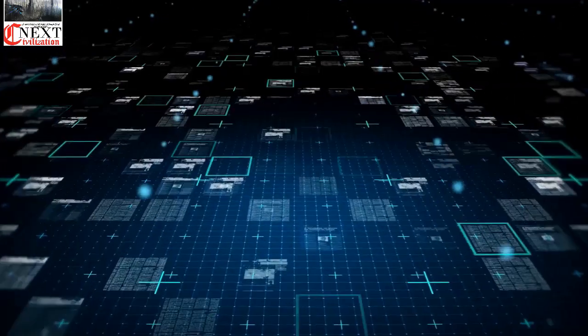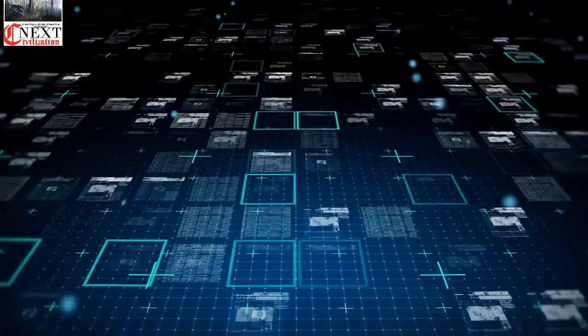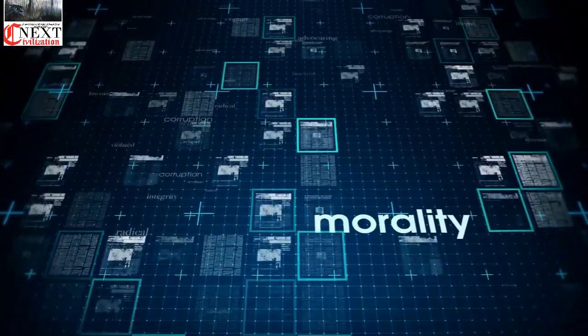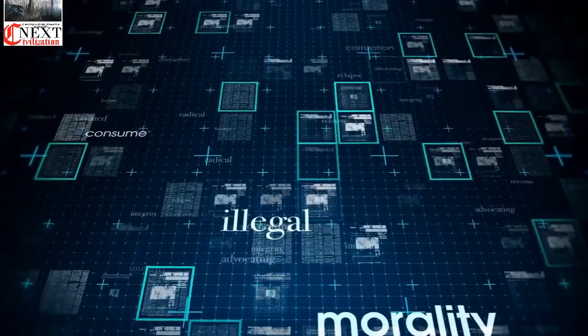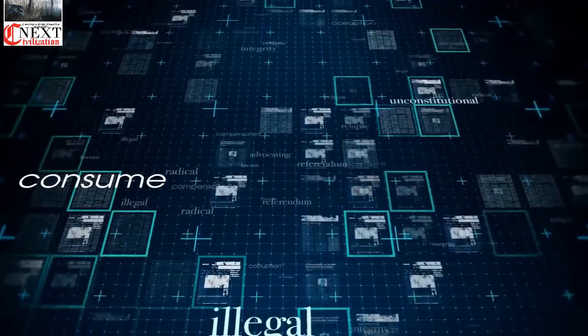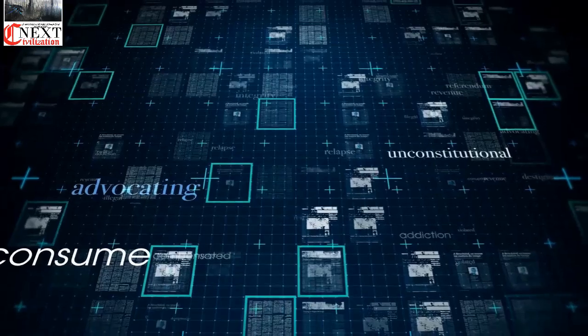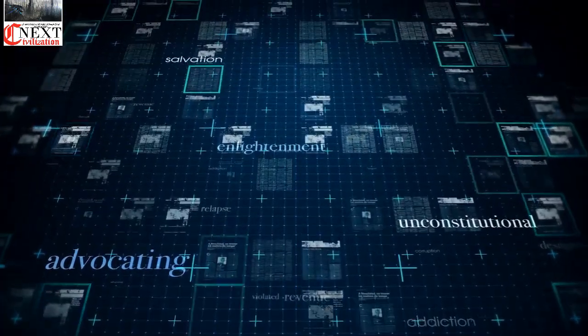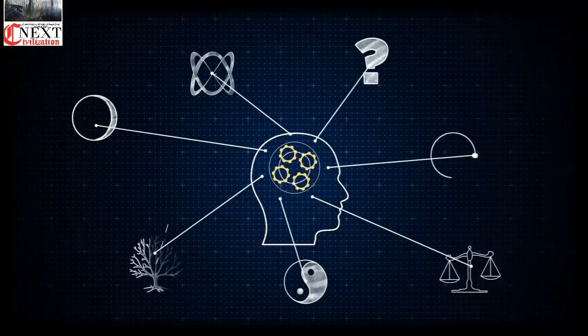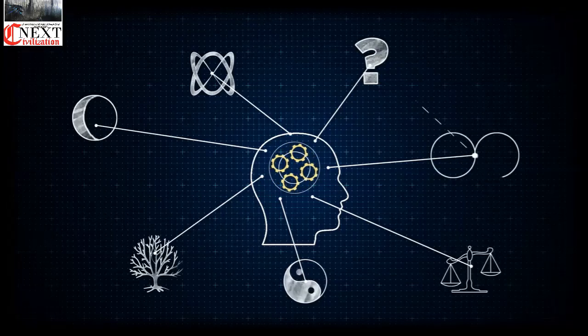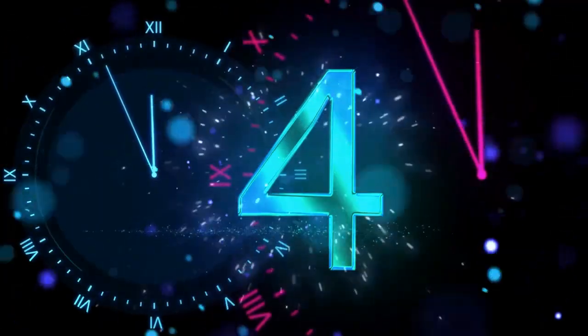Atlas was able to complete all eight tasks as follows: drive a utility vehicle at the site, travel dismounted across rubble, remove debris blocking an entryway, open a door and enter a building, climb an industrial ladder and traverse an industrial walkway, use a tool to break through a concrete panel, locate and close a valve near a leaking pipe, connect a fire hose to a standpipe and turn on a valve.